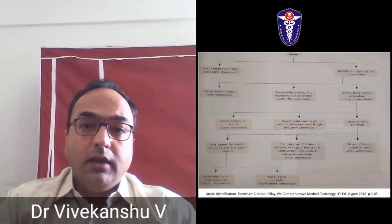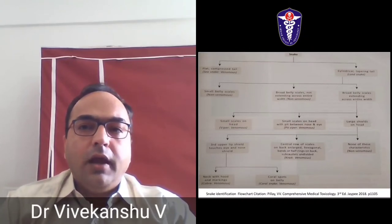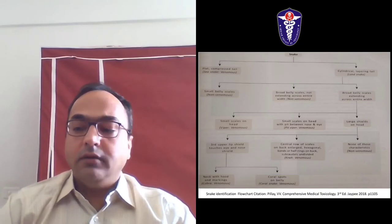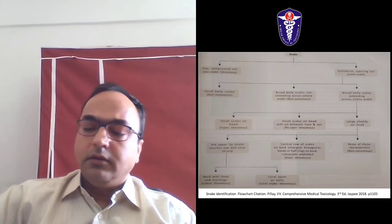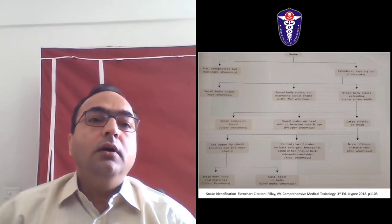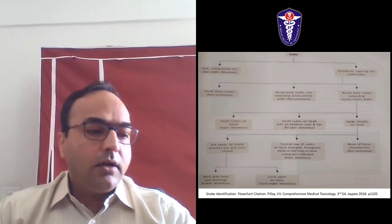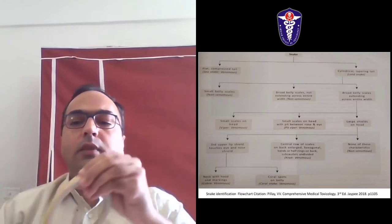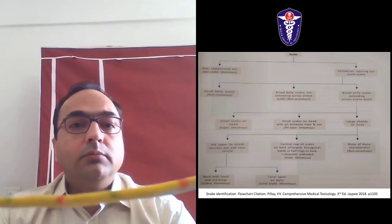How do we identify snakes when we examine the tail, the head, and the back scales? In snakes, if the snake has a flat compressed tail like a fin, it becomes a sea snake. And if there is a cylindrical body with a tapering tail, it is a land snake.